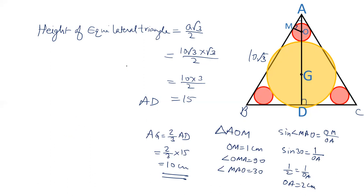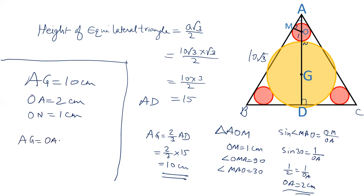So now we have the length of AG. The length of AG is 10 centimeter. OA is 2 centimeter. We have just calculated OA is 2 centimeter. Now if I take this point as N, ON is 1 centimeter which is radius. And therefore, if we write AG as OA plus ON plus GN: